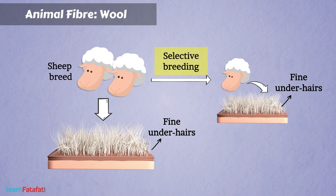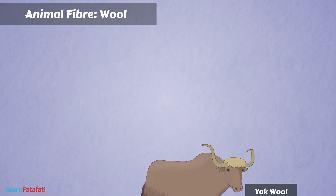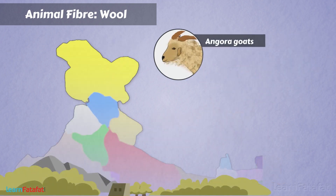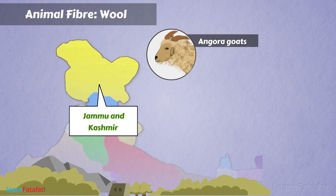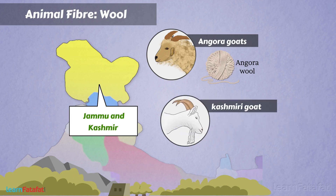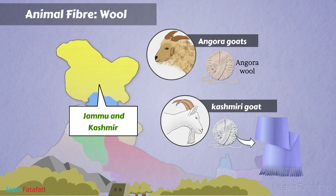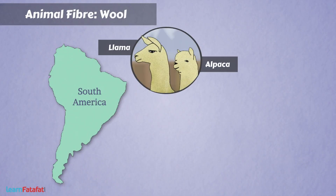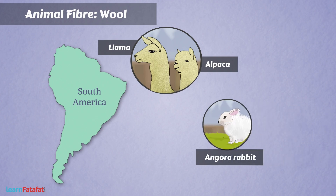There are other animals too which provide wool. For example, yak wool is popular in Tibet and Ladakh. Angora goats found in hilly regions like Jammu and Kashmir provide angora wool. Wool is also obtained from the hairs of goats. The under hairs of Kashmiri goats are very soft and are used to make fine shawls called pashmina shawls. In South America, animals such as llama and alpaca provide wool. Angora rabbit also provides wool.